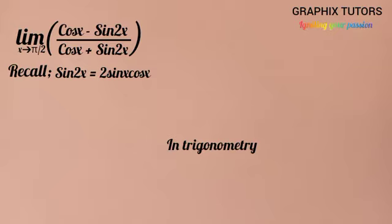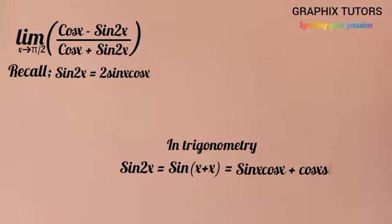Another way of writing sin 2x is by saying sin(x + x). If you expand that, you're going to be having sin x cos x plus cos x sin x. If you add sin x cos x plus sin x cos x, you're having 2 sin x cos x, because cos x sin x can be written as sin x cos x also. So we're having 2 sin x cos x.